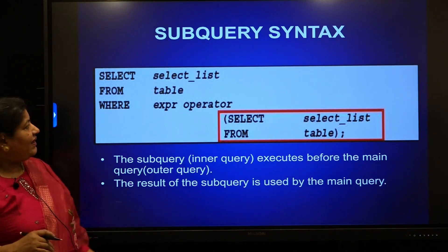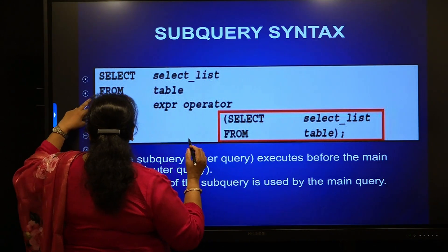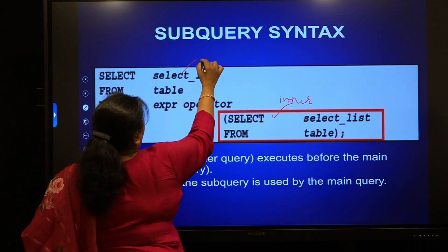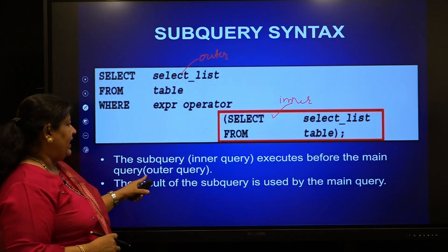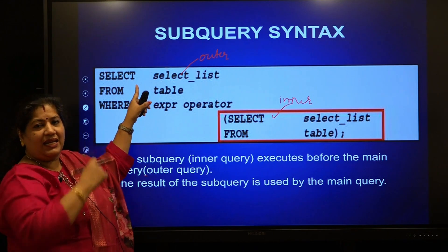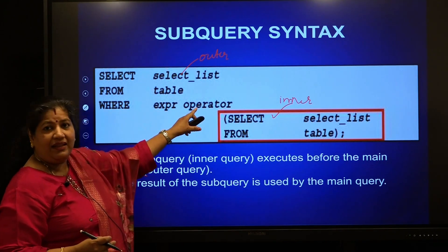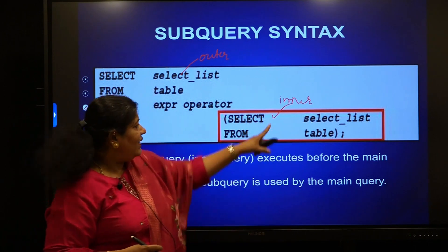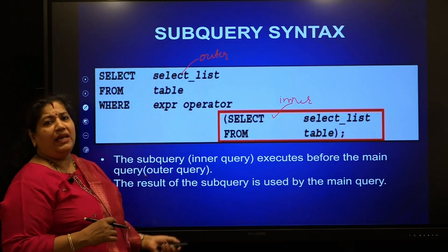Let us see the syntax. It is going to be a query inside another query — this is known as the inner query and this one becomes the outer query. The subquery executes before the main query, and the result of the subquery is used in the main query. For example, I am finding the names of the employee from EMP where the salary is greater than — SELECT salary FROM employee WHERE ename is equal to Jones. That is, find the Jones salary and use that value to check all employees who are earning more than that salary.